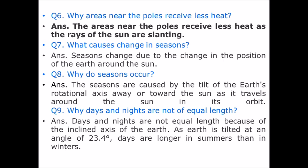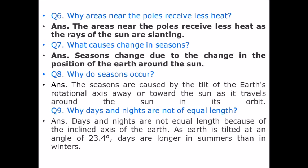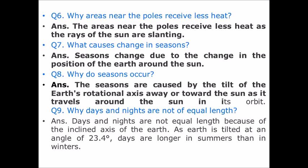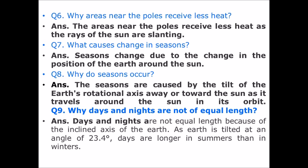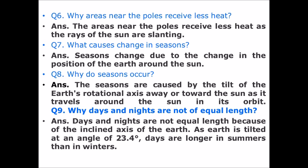Question number 7: What causes change in seasons? Answer: The seasons change due to the change in the position of the Earth around the sun. Question number 8: Why do seasons occur? Answer: The seasons are caused by the tilt of the Earth's rotational axis away or towards the sun as it travels around the sun in its orbit. Question number 9: Why are day and night not of equal length? Answer: The days and nights are not of equal length because of the inclined axis of the Earth, as the Earth is tilted at an angle of 23.5 degrees.